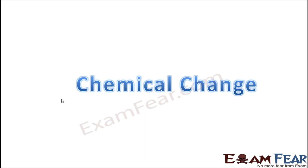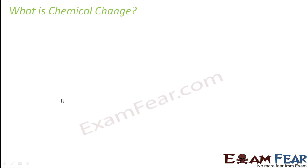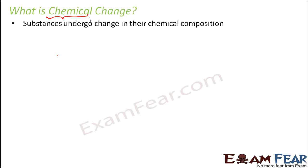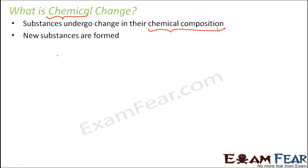Now that we have discussed physical change, let us look at chemical change. The name itself suggests that here we will see some changes in the chemical composition of the substance. Not only the appearance changes, but there will also be a change in the chemical composition. A new chemical substance will be formed, and mostly these changes are irreversible.